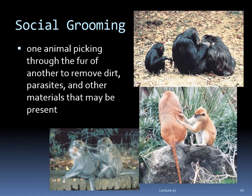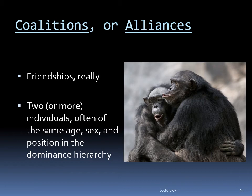One of the most common affiliative behaviors among almost all primate species is social grooming — one animal picking through the fur of another to remove dirt, parasites, and other materials. Grooming and other kinds of physical contact show that individuals trust one another, not just to each other but to any others watching, helping to strengthen networks of trust within the troop. In apes and some monkey species, close relationships that are essentially lifelong friendships sometimes form between individuals of similar age, sex, and level in the dominance hierarchy. Primatologists often call these coalitions or alliances, but there is no reason not to call them friendships.